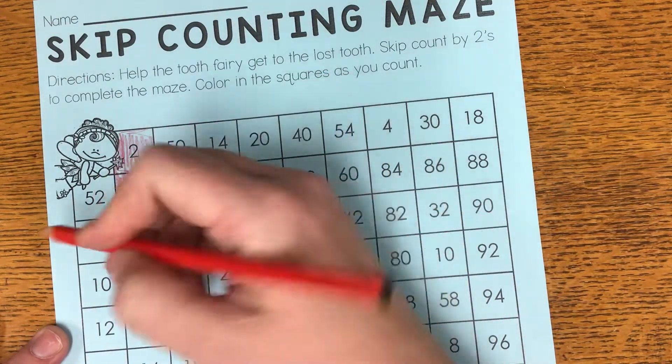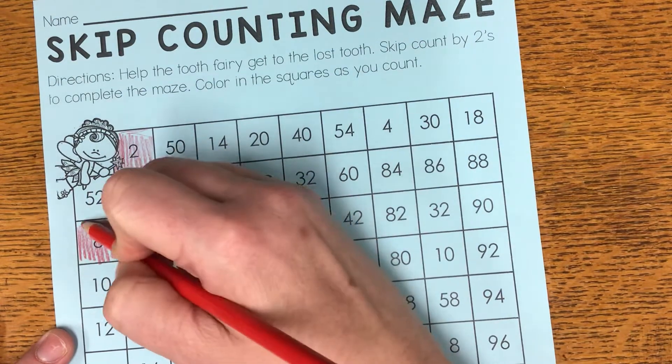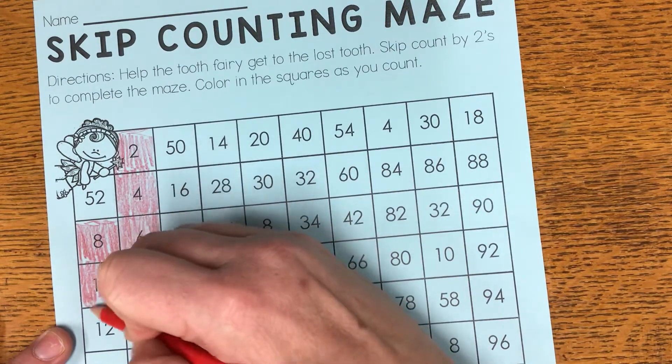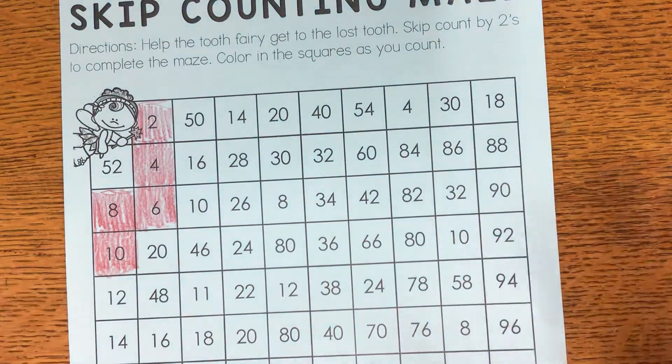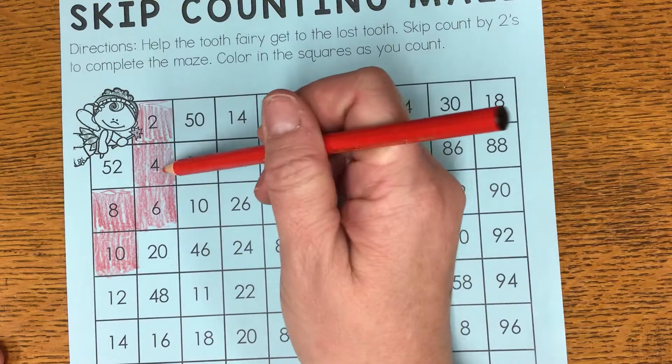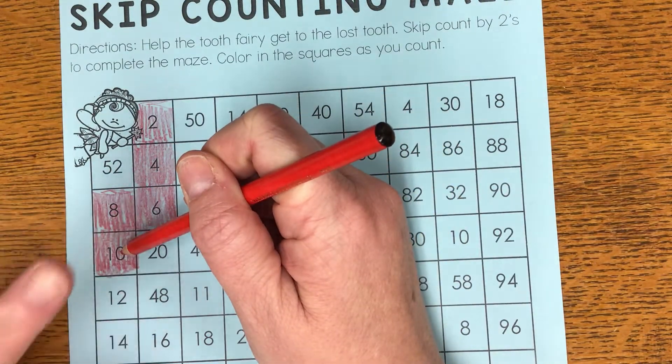Ten. Now this is where I really have to turn on my thinking brain because I'm going to be adding two to it each time. Two, four, six, eight, ten, eleven, twelve.